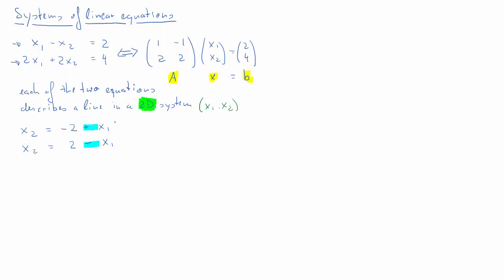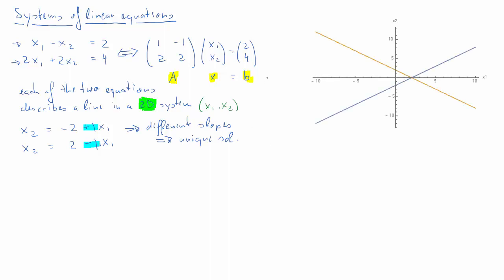You can see that these two lines have different slopes. The first one has a slope of plus 1, the second of minus 1. If you've seen lines represented in a coordinate system, you will immediately recognize that as these two lines have different slopes, they will have one unique solution — meaning there will be one point in the coordinate system where these two lines intersect.